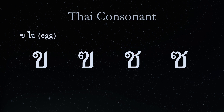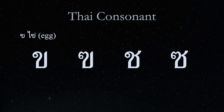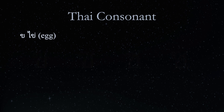The same applies to So So, which in addition has an indentation on the curve at the top left corner of the letter. An example of a word containing Kho Kai is Ka, meaning leg. Ka is in the rising tone.